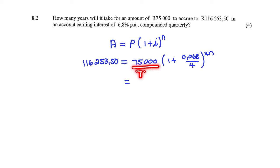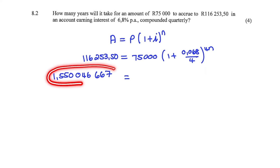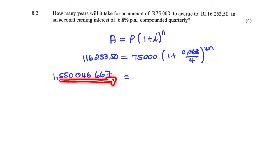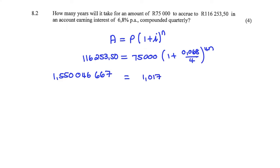First, I'll simplify by dividing both sides by 75,000 and notice that when I divide, I keep as many decimal places as possible. This will allow for more accuracy in my calculations and only round off right at the end. Next, I'll simplify this bracket: 1.017 to the power of 4n. Now I can use log laws to find 4n.